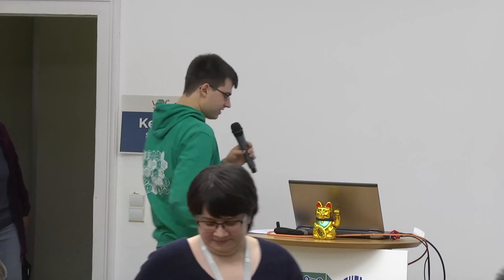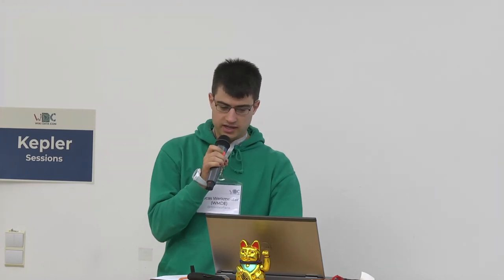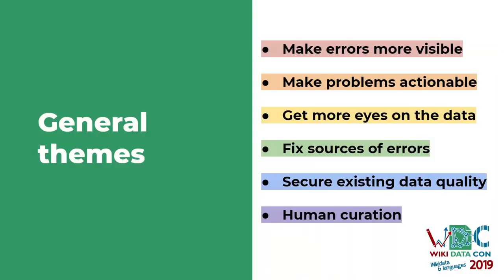Hi, I'm Lukas. I'm going to start with an overview of data quality tools that we already have on Wikidata and also some things that are coming up soon. I've grouped them into some general themes: making errors more visible, making problems actionable, getting more eyes on the data so that people notice the problems, fixing some common sources of errors, maintaining the quality of existing data, and human curation.